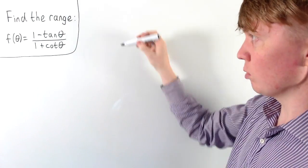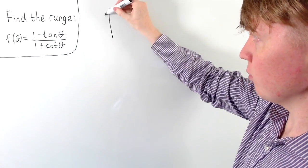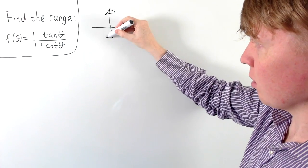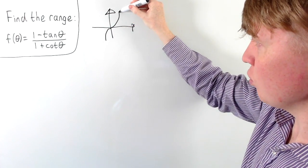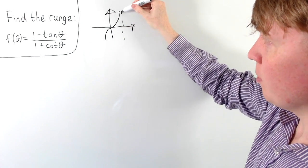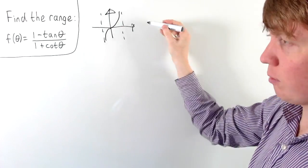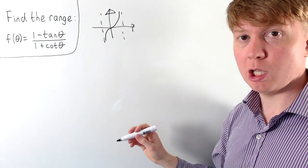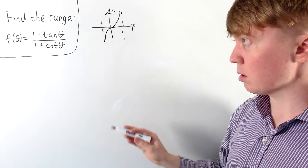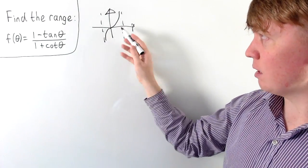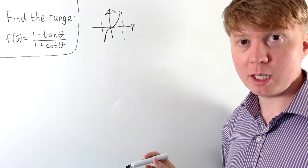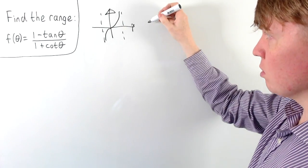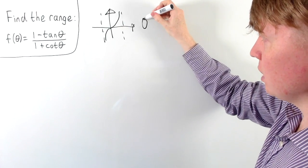For tan theta, we can draw a graph and we know that it has asymptotes at π/2 or -π/2, and these repeat every π units as we go along. So this tells us that tan theta at these asymptotes is not well defined, so we have to exclude certain values of theta.